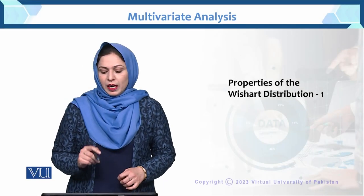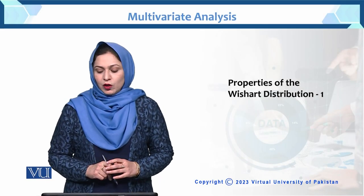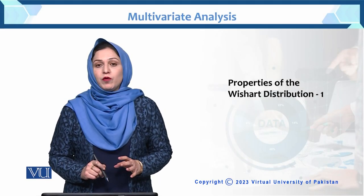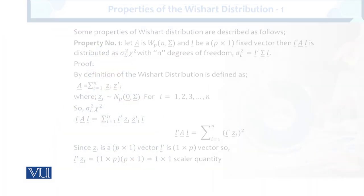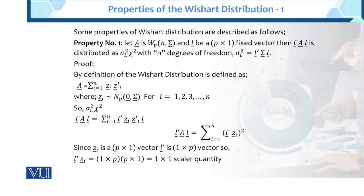Dear student, here we are going to learn the properties of the Wishart distribution. Now we have Property Number 1. Let A be Wishart with parameter n, sigma, and L. Basically, we have a transformation done, and let L be a p×1 fixed vector.